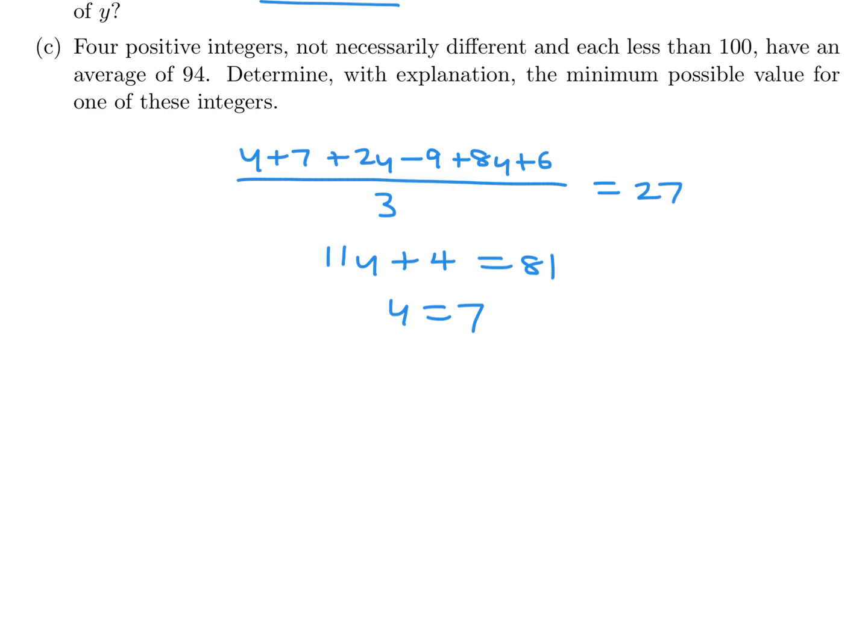Four positive numbers, not necessarily different, and each less than 100 have an average of 94. Determine with explanation the minimum possible value for one of these integers. Let's say those numbers are A, B, C, and D. If you add them up and divide by 4, you will get the average, which in this case they're saying is 94. So that means A plus B plus C plus D is 94 times 4, which is 376. Now we want the minimum possible value for one.